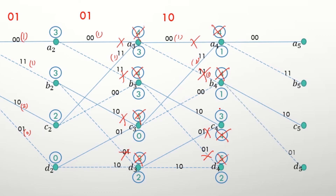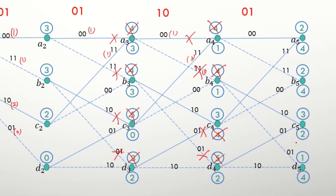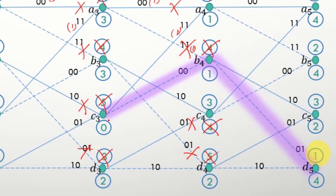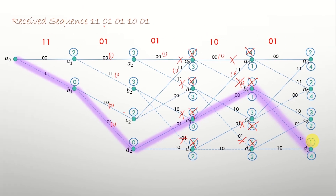Continuing to draw the trellis diagram and taking the last received pair, which is 01, we compute the metric for each node. At this final point we do not need to cancel the highest metric for each node because we have analyzed all the received sequence. Instead, we look for the smallest possible metric — the smallest is 1. This path and its corresponding path are selected as the survivor path. We travel backwards along the selected path to trace the survivor path all the way to the first state.